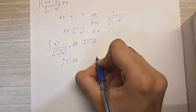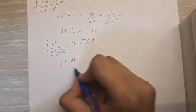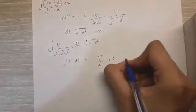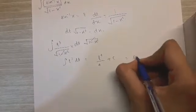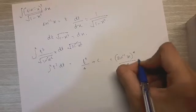Which we know is t raised to 4 upon 4 because it's the power plus 1 and the same in the denominator, power plus 1. So t raised to 4 upon 4 plus c. Which ultimately becomes sin inverse x raised to 4 upon 4 plus c.